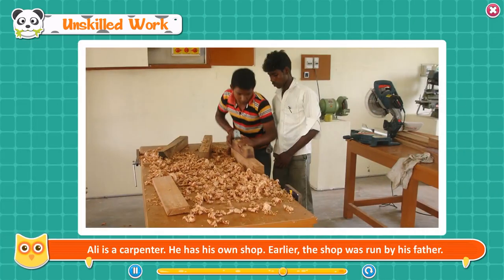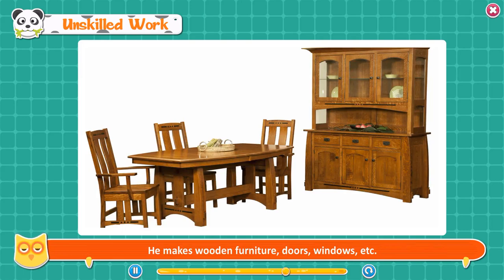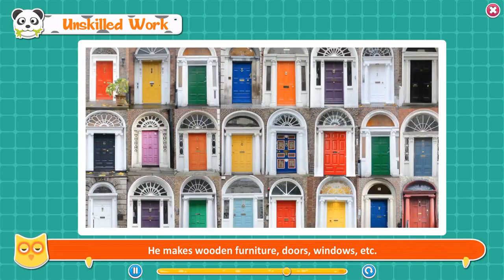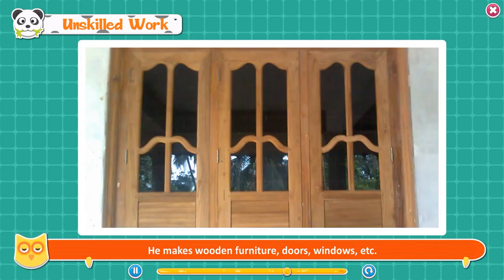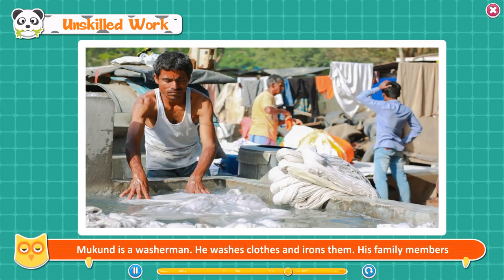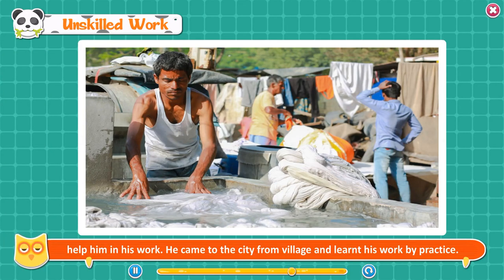Ali is a carpenter who has his own shop — earlier, the shop was run by his father. He makes wooden furniture, doors, and windows. Mukund is a washerman who washes and irons clothes. His family members help him in his work. He came to the city from a village and learned his work by practice.